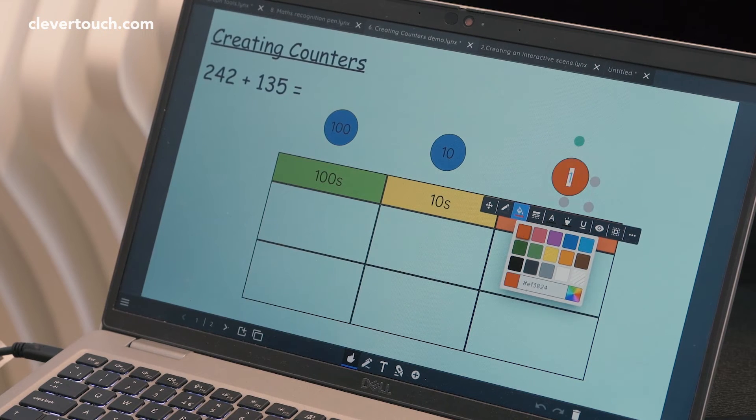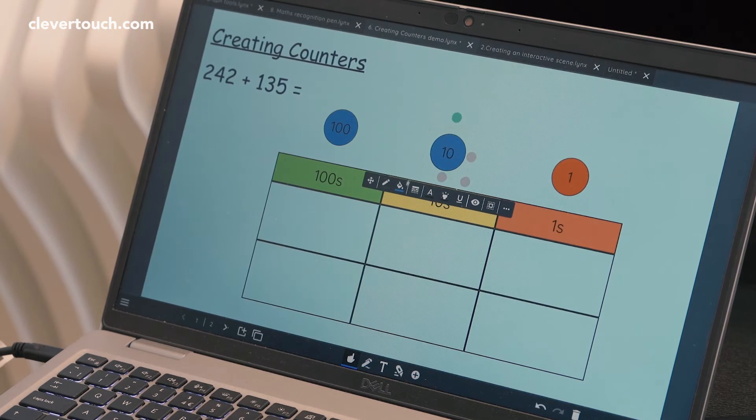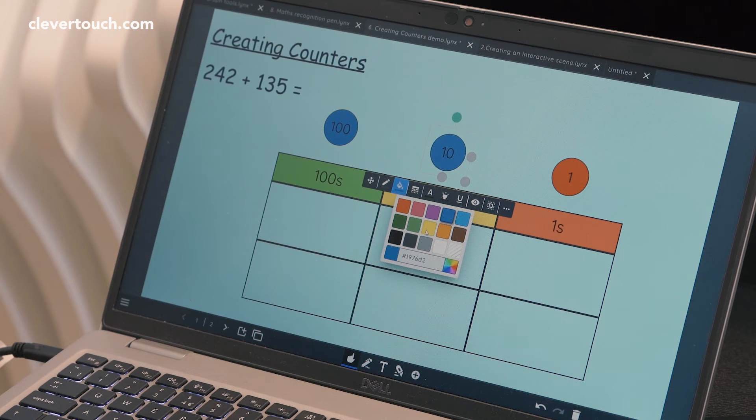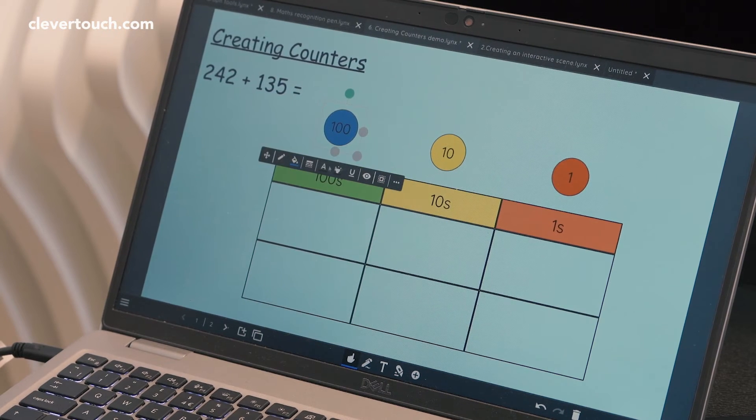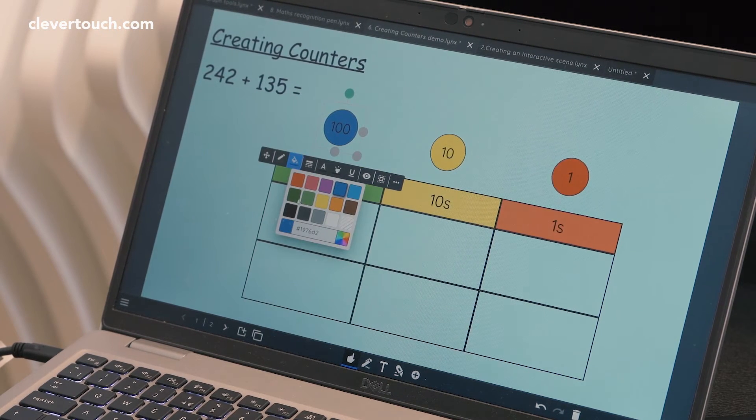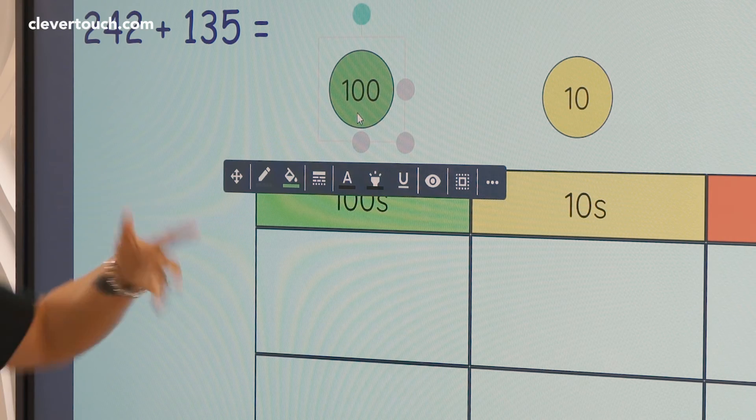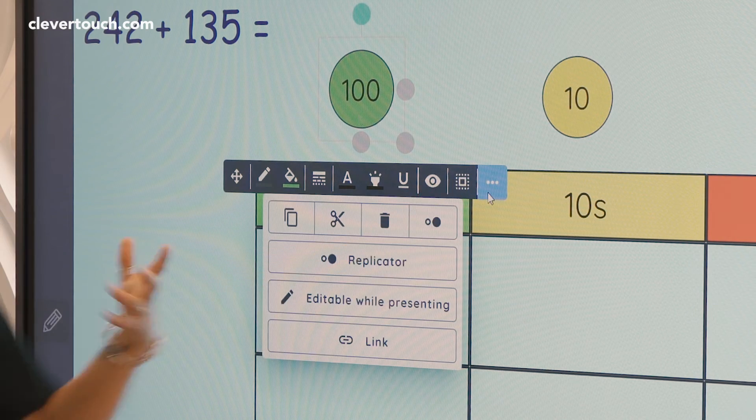So clicking on the little paint box and changing those colors. So now we're back at the board I can show you I'm going to set this up so it's ready to replicate whilst I'm in presentation mode.